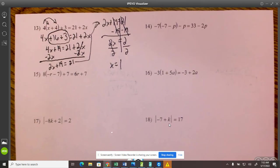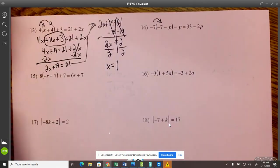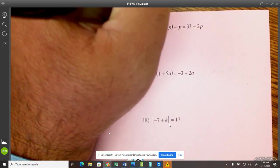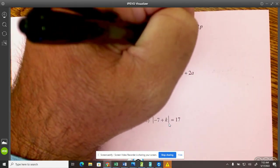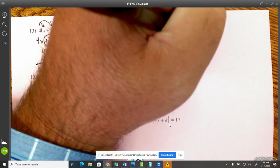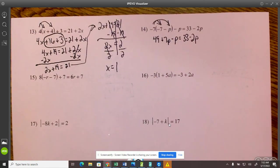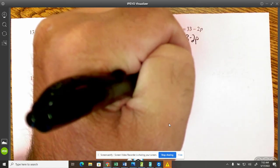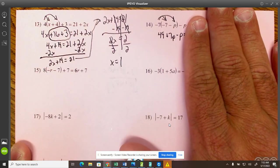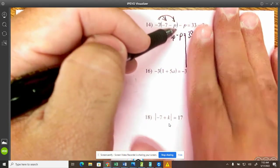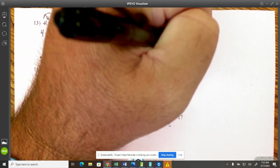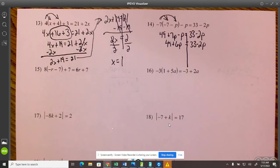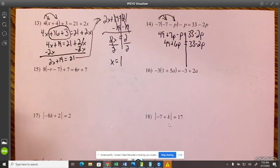Let's do one more. Negative 7 times negative 7, 49. Negative 7 times negative P is a positive 7P. Minus P equals 33 minus 2P. So I have a lot of things right now. So let's just do anything that I can on the left side. So 7P minus P is 6. And then over here, this is already simplified. Now remember what I said. Move the smallest thing. Move the smallest variable first. That will be the easiest path.